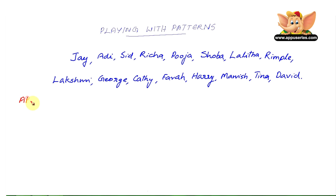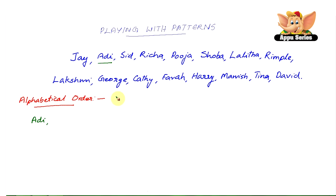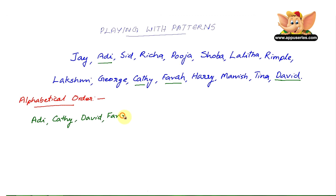Order means names starting with A come first, and then those with B, C, D, and so on. So first comes A — that's Adi. Then comes B, but we don't have any names beginning with B, so we move on to C — that's Kathy. Then D — that's David. Then E, but we don't have any names beginning with E, so we move on to F — that's Farah. And G for George.